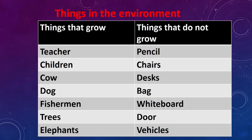Okay. Things in the environment can be categorized under two main groups. Now we are going to learn that. Things that grow and things that do not grow.